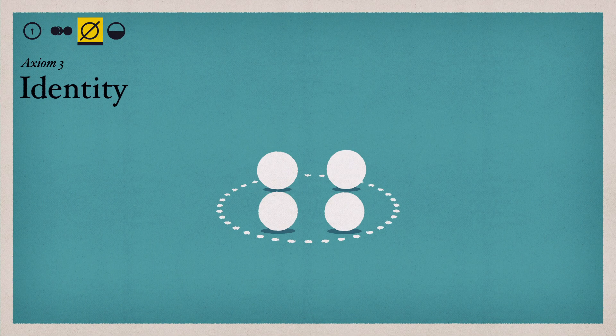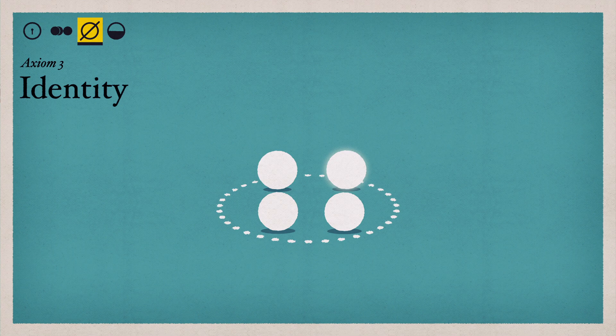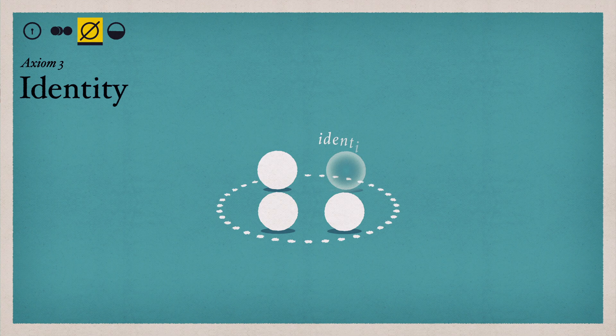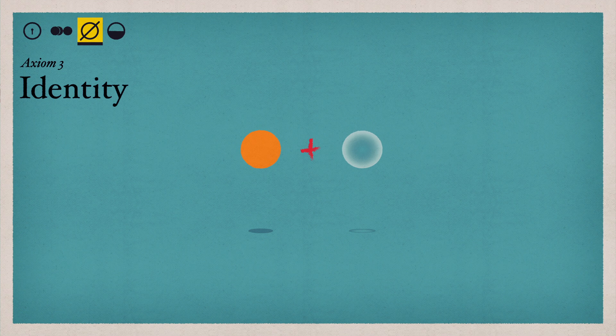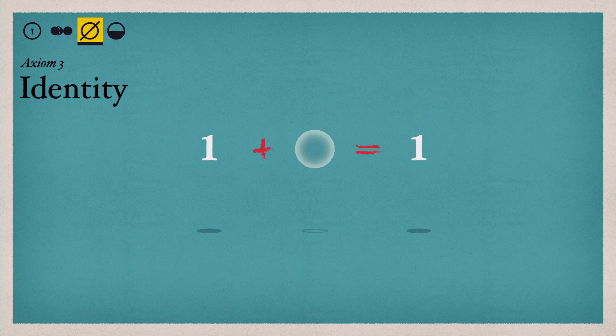Axiom 3: For every operation, there's an element of our group called the identity. When we apply it to any other element in our group, we still get that element. So for both turning the square and adding integers, our identity here is 0. Not very exciting.